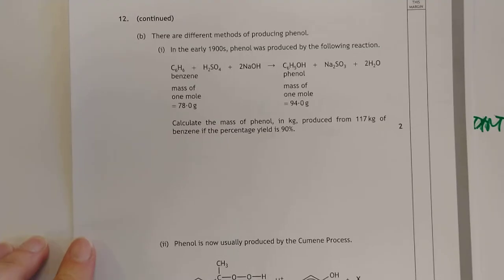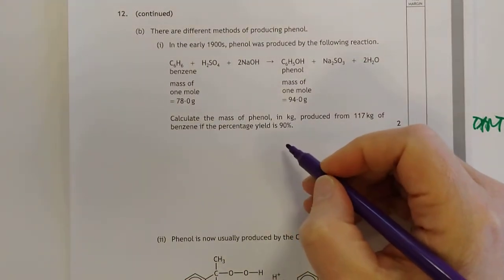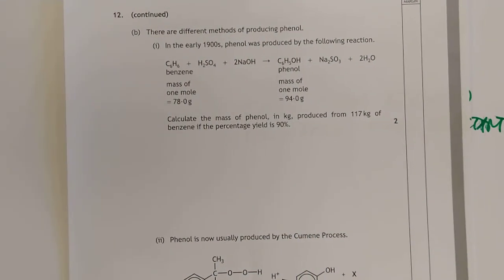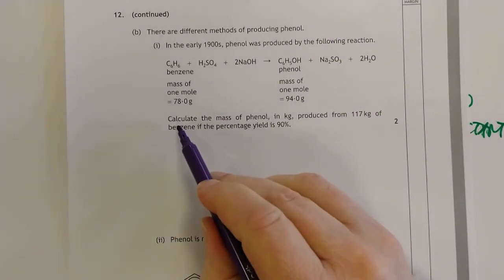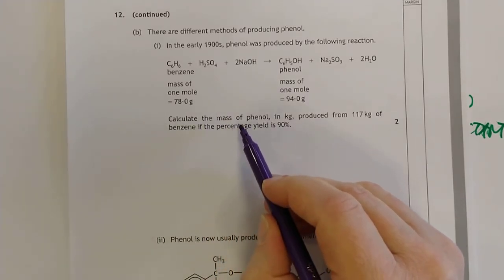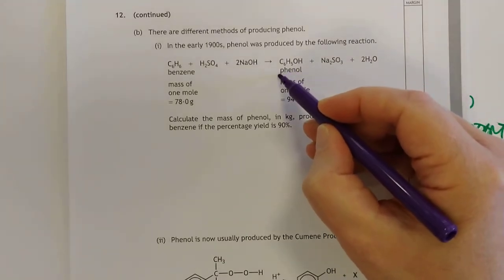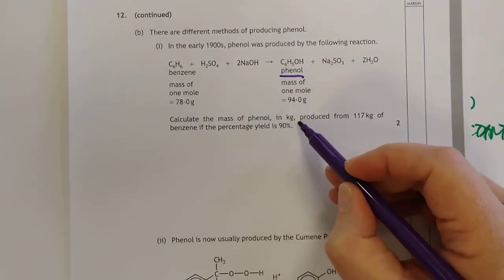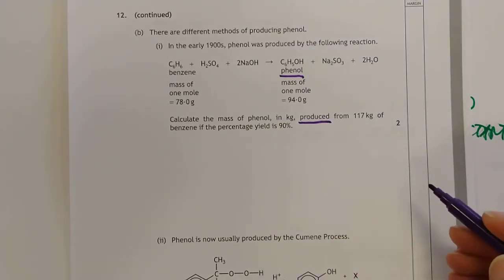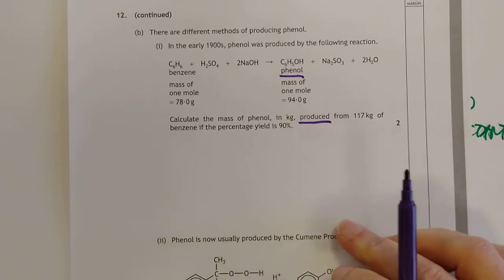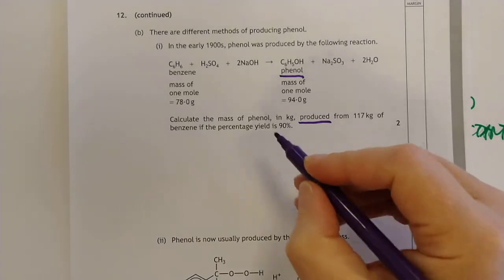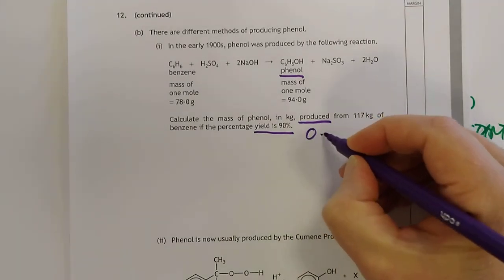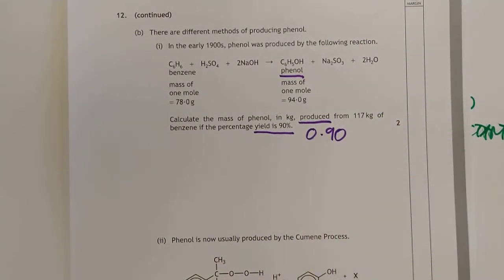This is a more interesting one because they have given you the percentage yield and they're asking you something else. This seems to be more common, probably because it's slightly trickier. Calculate the mass of phenol. Phenol is there, so that is your product. So they want the mass of your product actually made. We're solving now for the top line. We need to know the percentage yield and the bottom line which is the theoretical yield. They have told us the percentage yield is 90%, in other words 0.9.